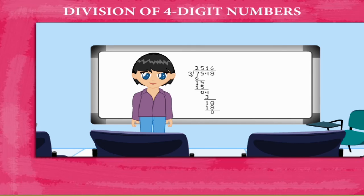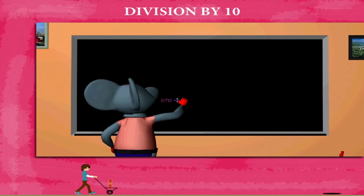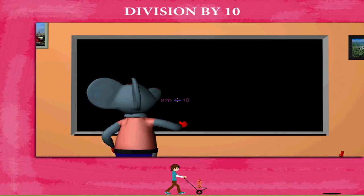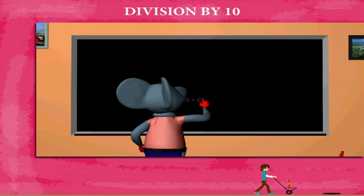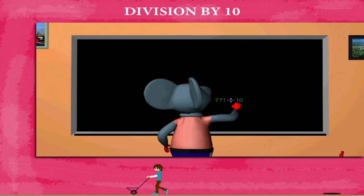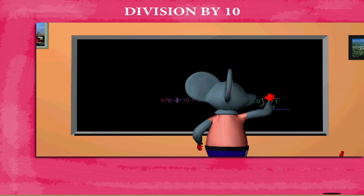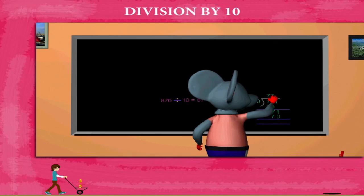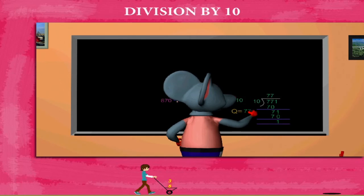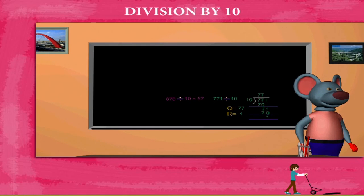Division by 10. Robby Mouse writes 670 divided by 10. He writes the answer 67. Now he divides 771 by 10. He uses the long method to divide and gets 77 as quotient and 1 as remainder. Numbers ending with a 0 can be divided by 10, but other numbers end up with a remainder. Well done, Robby.